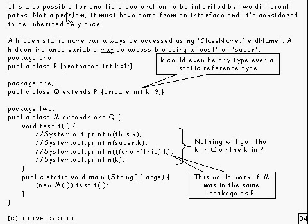It's also possible for a single field declaration to be inherited into a class via two different paths. But that's not a problem because for that to happen it must have come from an interface. And in any case it's considered to be inherited only once.